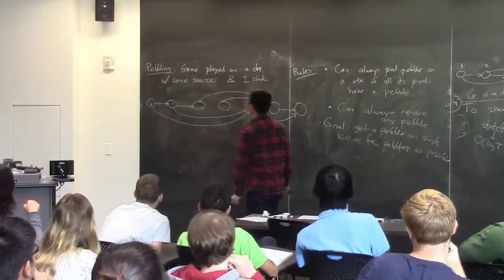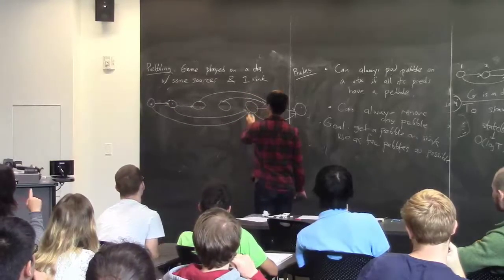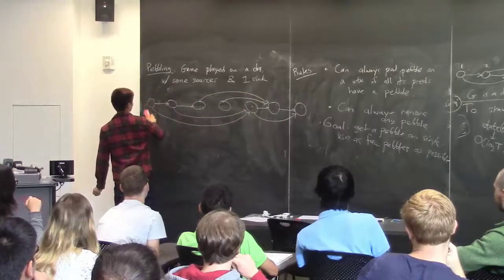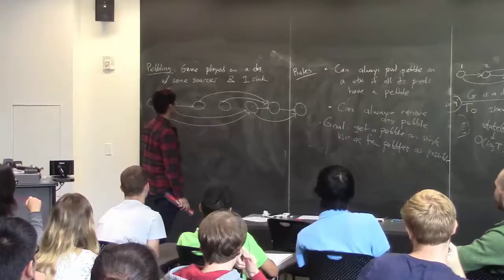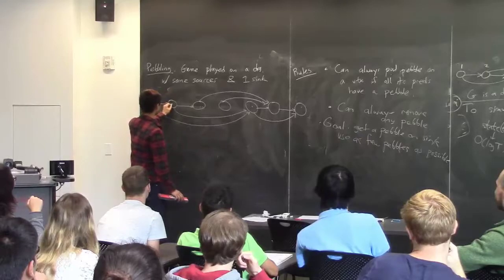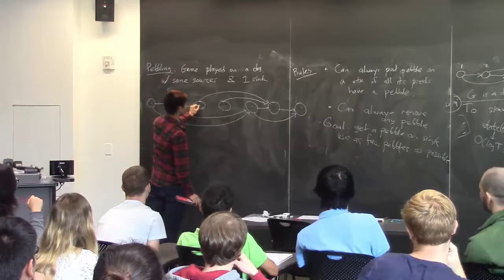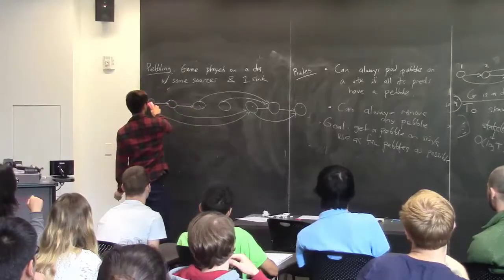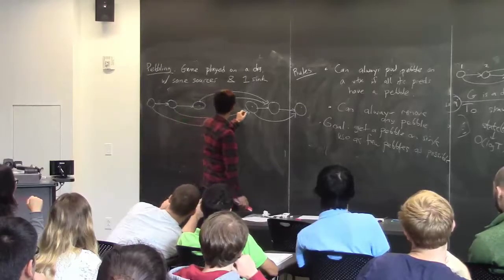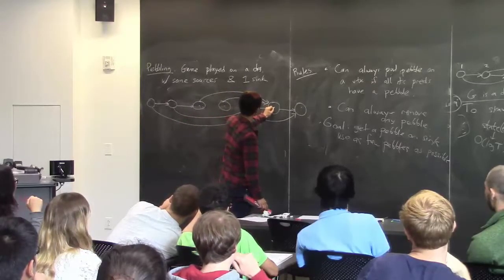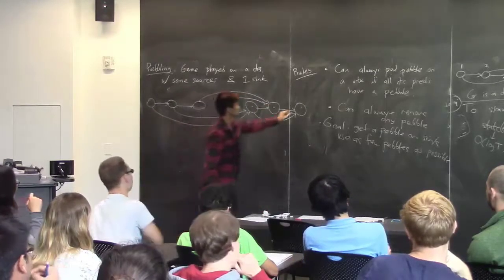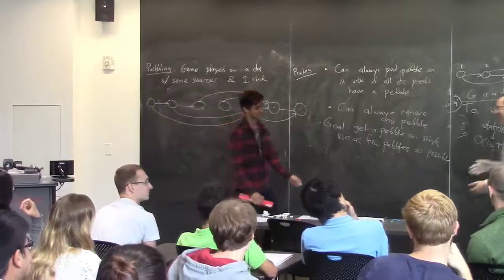Kevin comes up and demonstrates a pebbling strategy. He places pebbles legally — each time a predecessor is pebbled first — and erases some to reuse. He uses four pebbles at peak, which appears to be the minimum. He got the last vertex onto the sink. Congratulations, Kevin.